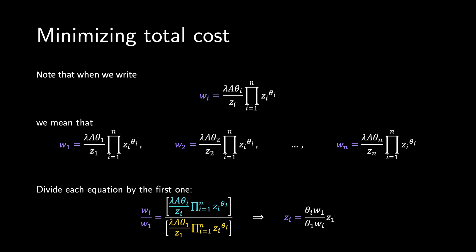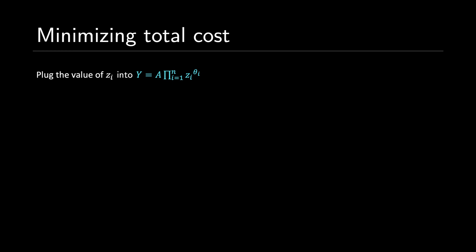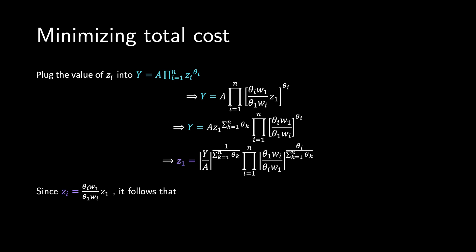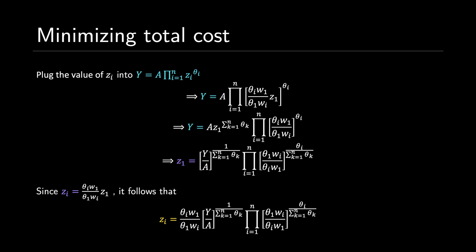Now that we have an expression for each z sub i in terms of z sub 1 and other constants, we plug each back into the equation y equals A times the product from i equals 1 to n of z sub i to the power of theta sub i to find z sub 1. We factor out z sub 1 to the power of the summation, then rearrange to solve for z sub 1 in terms of all the constants. With z sub 1 determined, we can find every other z sub i term, answering the first part of our question.